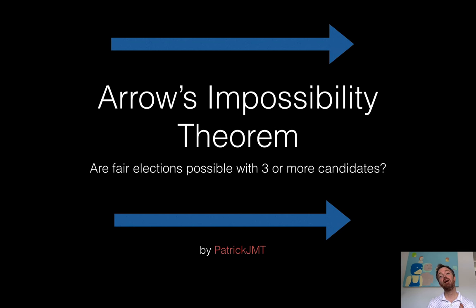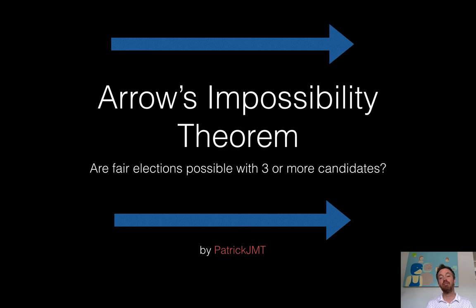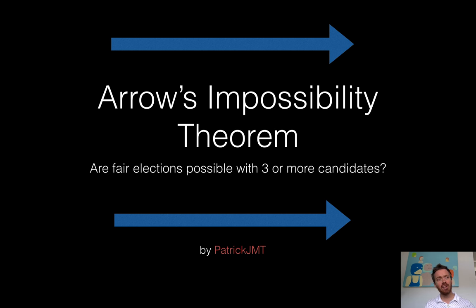This video is going to be about what's known as Arrow's Impossibility Theorem, and what it deals with is whether it's always possible to have fair elections with three or more candidates. We always hear about this notion of the election not being fair, or the election is fair, or it was rigged.